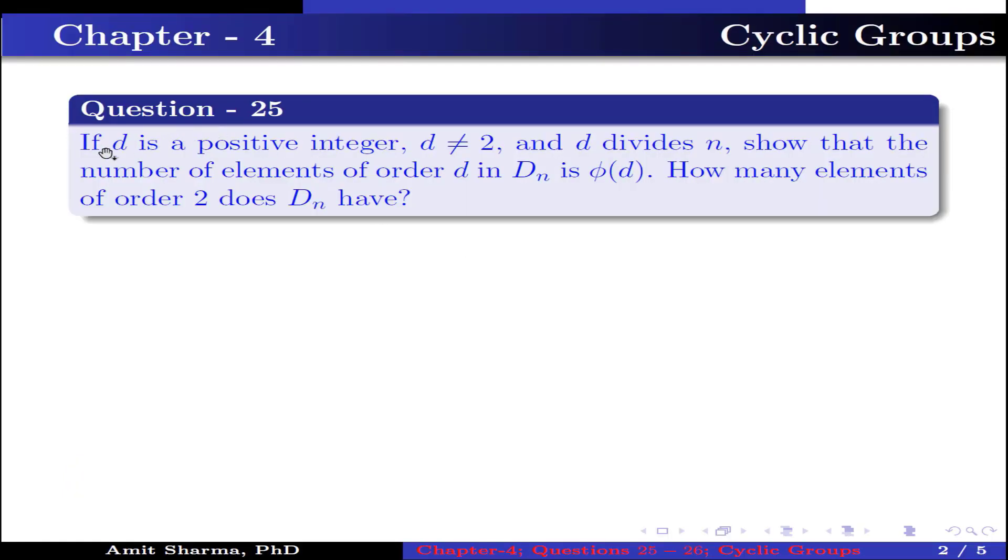Question number 25: If d is a positive integer, d is not equal to 2 and d divides n, show that the number of elements of order d in D_n is φ(d). How many elements of order 2 does D_n have?